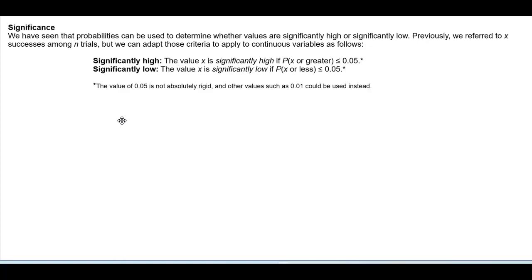Significantly low if the value of X is significantly low if the probability of X or less is less than or equal to 0.05. Now the value of 0.05 is not absolutely rigid and other values such as 0.01 could be used instead.